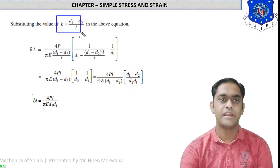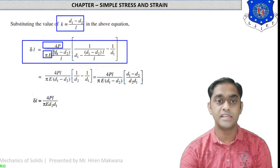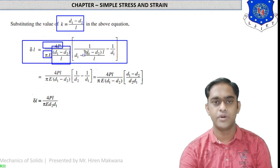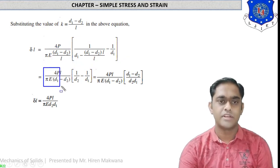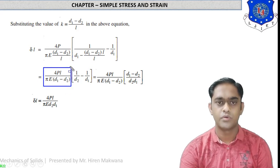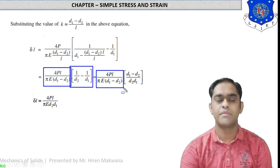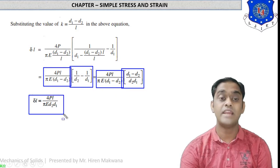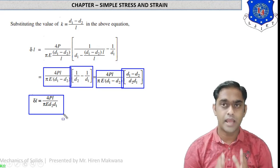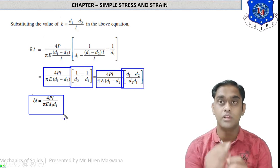Substituting k = (D1 minus D2)/L back, D1 minus kL becomes D2, so we get 4PL/(πE(D1 minus D2)) times (1/D2 minus 1/D1). Taking LCM in the bracket gives (D1 minus D2)/(D1·D2), and the (D1 minus D2) terms cancel. The final formula is delta L equals 4PL/(π·E·D1·D2).